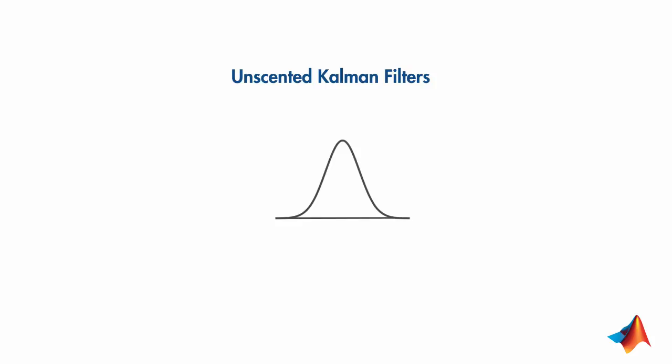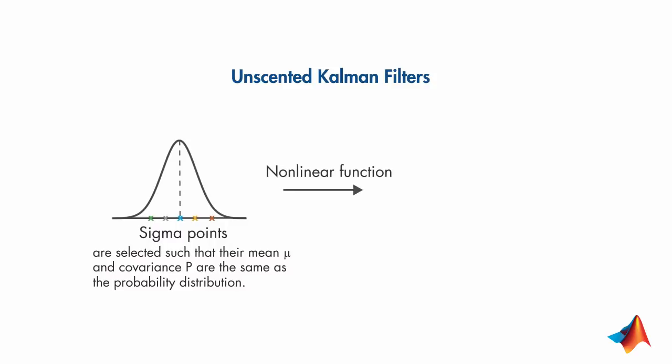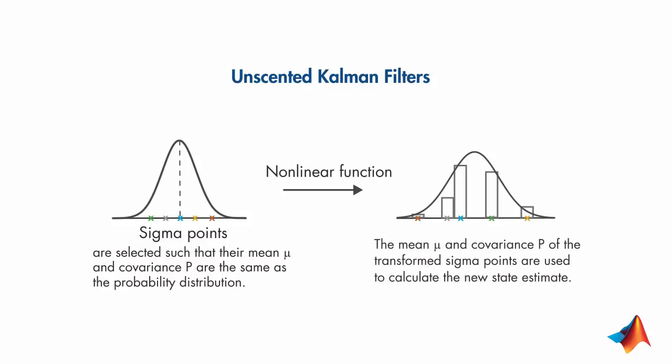What we mean by that is the following. This is the probability distribution. An unscented Kalman filter selects a minimal set of sample points such that their mean and covariance is the same as this distribution. These are referred as sigma points and are symmetrically distributed around the mean. Each sigma point is then propagated through the nonlinear system model. The mean and covariance of the nonlinearly transformed points are calculated and an empirical Gaussian distribution is computed, which is then used to calculate the new state estimate.